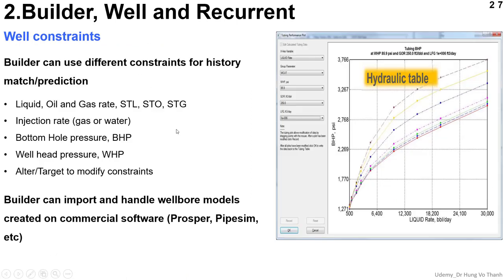Now we would like to continue with the well constraints for your model. If you think about well constraints, they usually support the history matching or production predictions for the future of your well or reservoir performance. You can consider the liquid, oil, or gas rate, or you can consider the injection rate, bottom hole pressure, wellhead pressure, or the target to modify the constraints. This kind of information is very useful when you would like to control or monitor your field development plan, or you can maximize the production rate using this information.